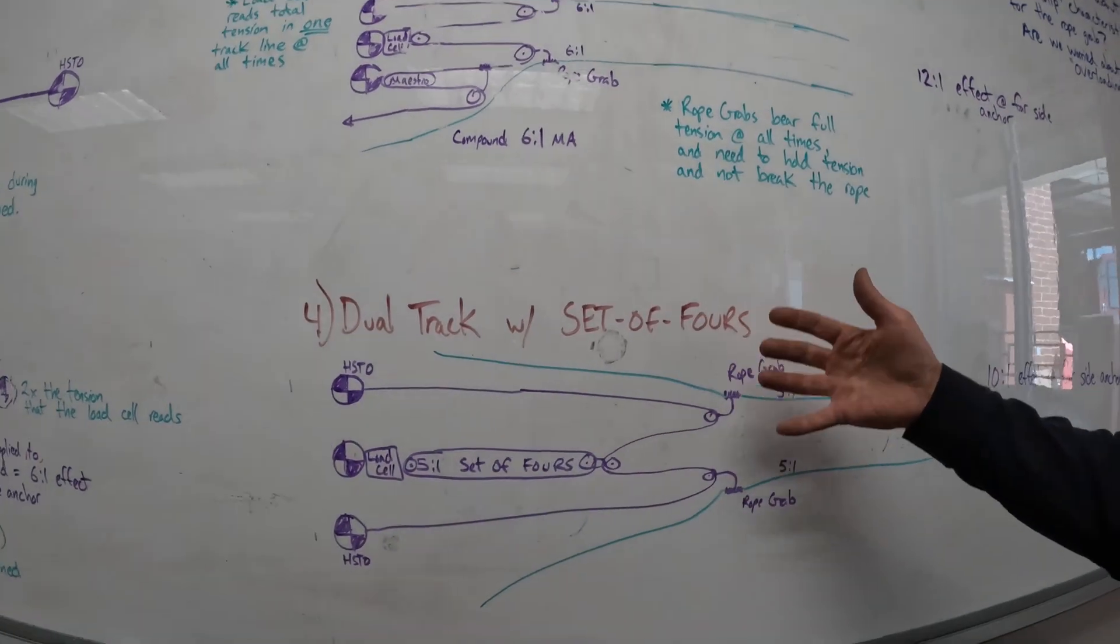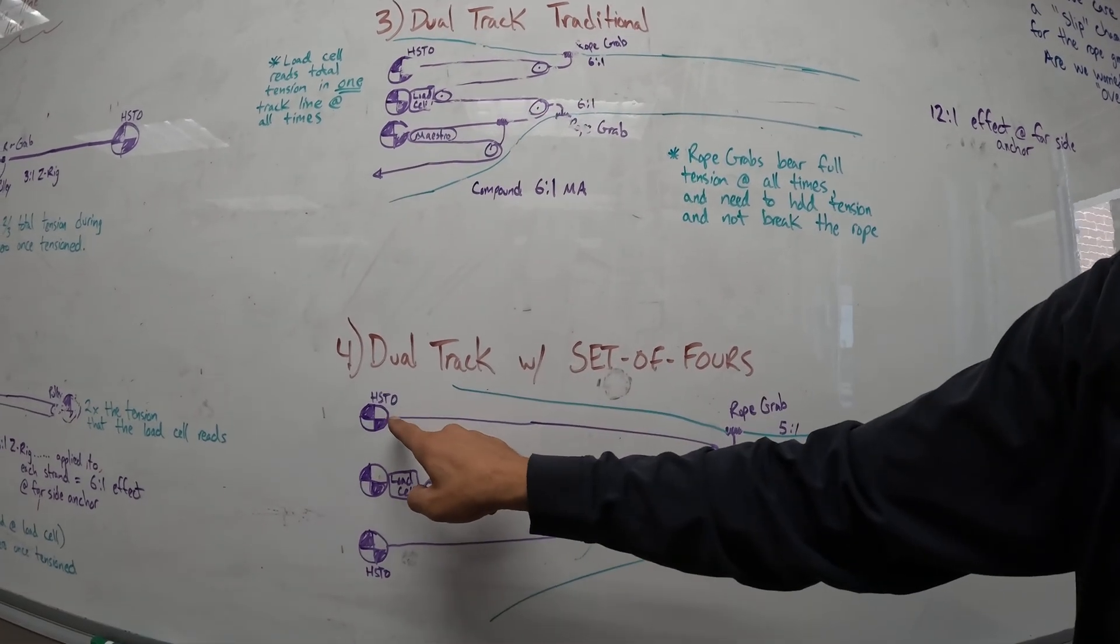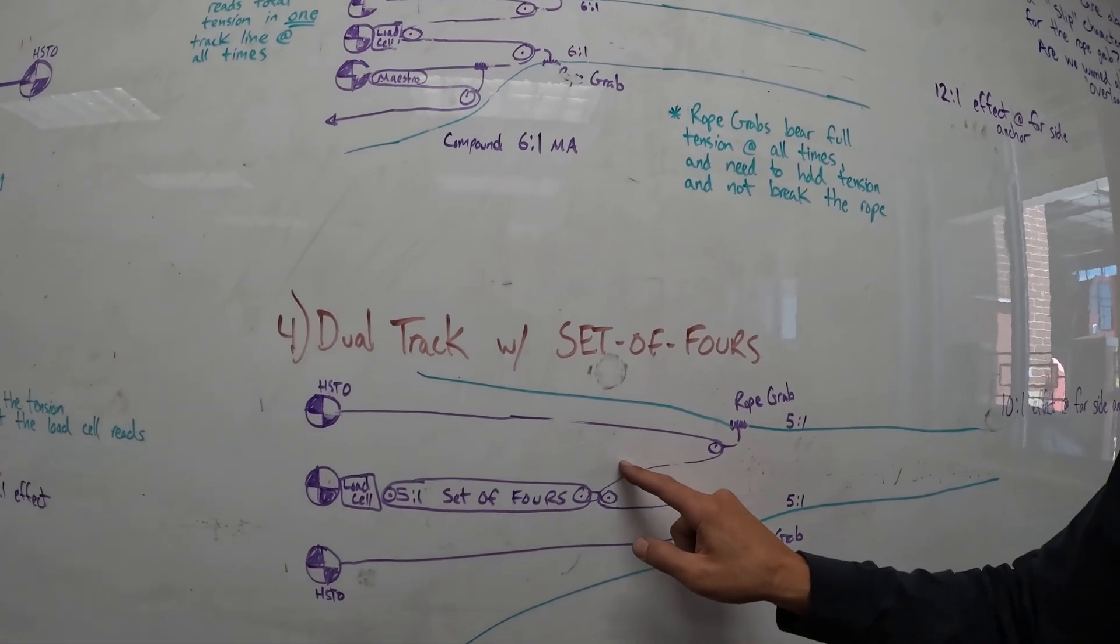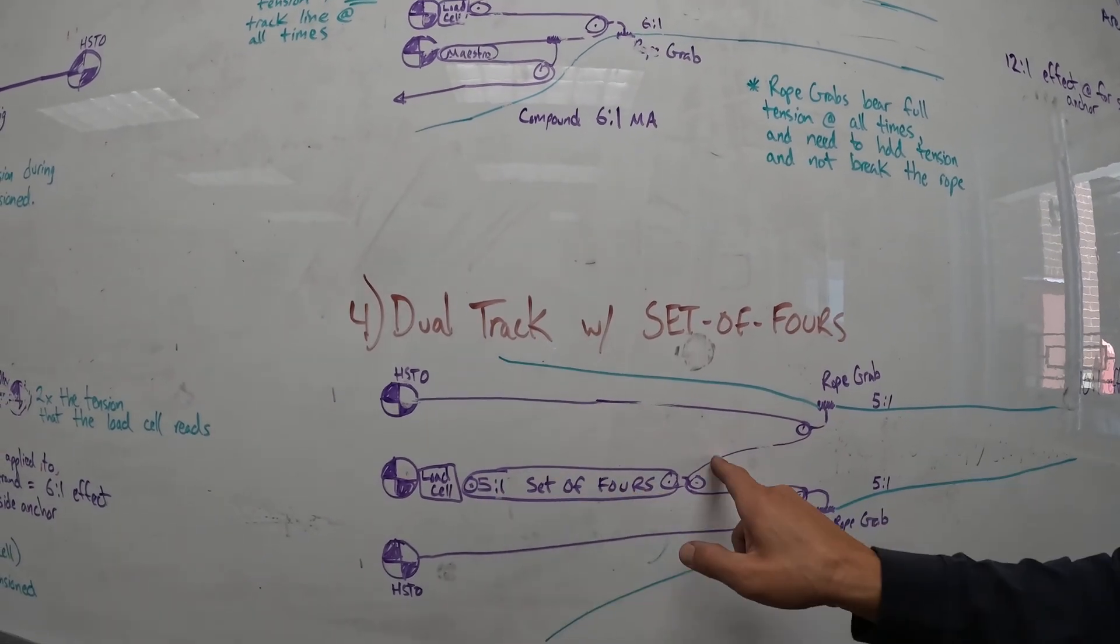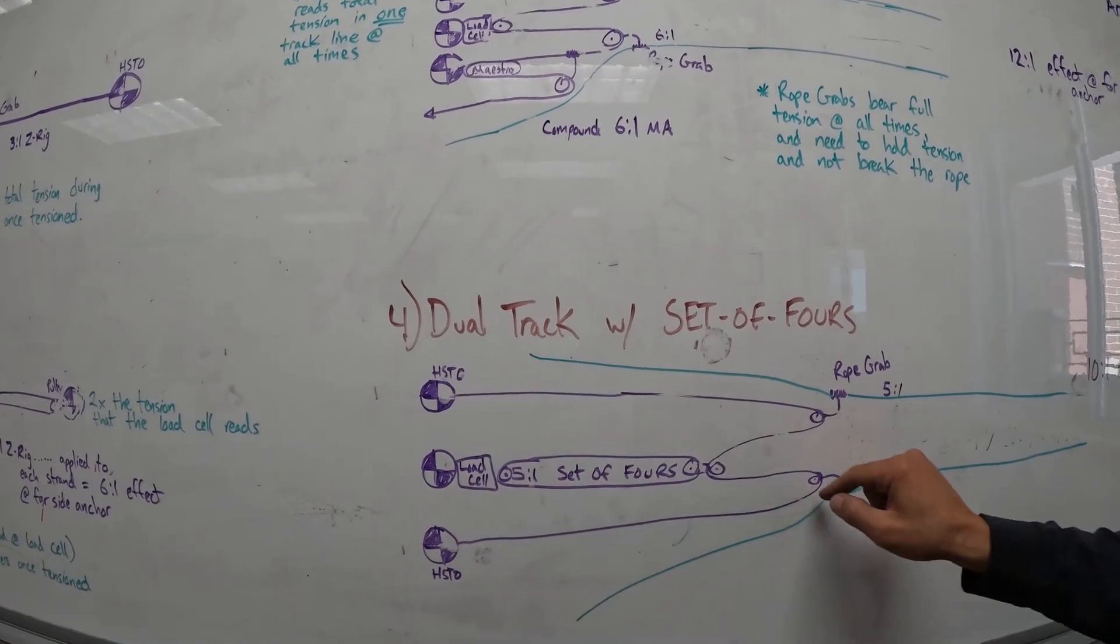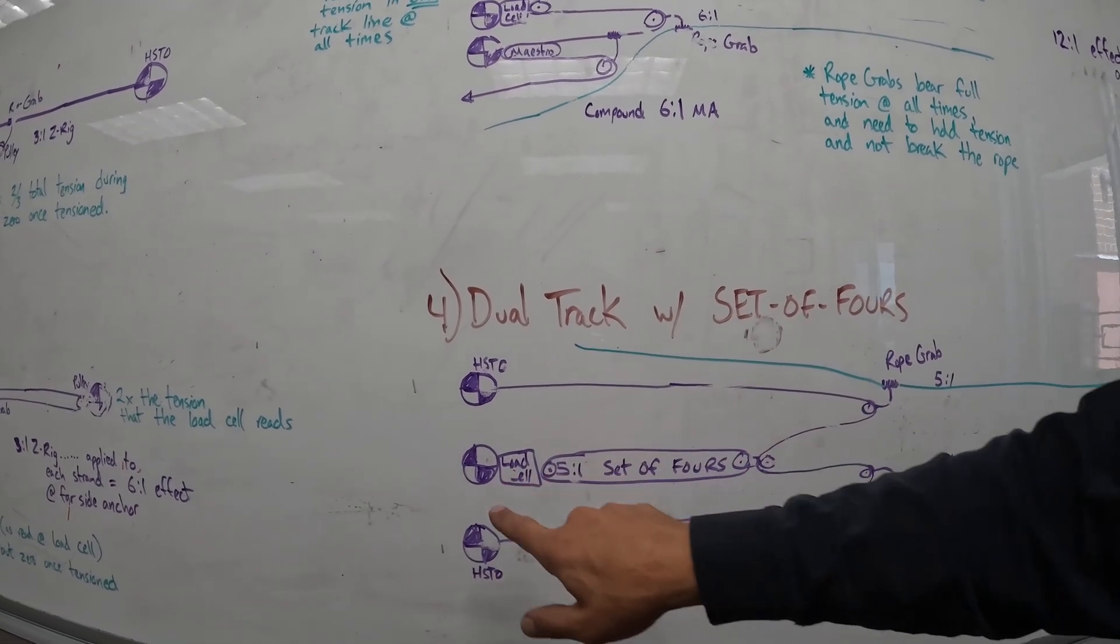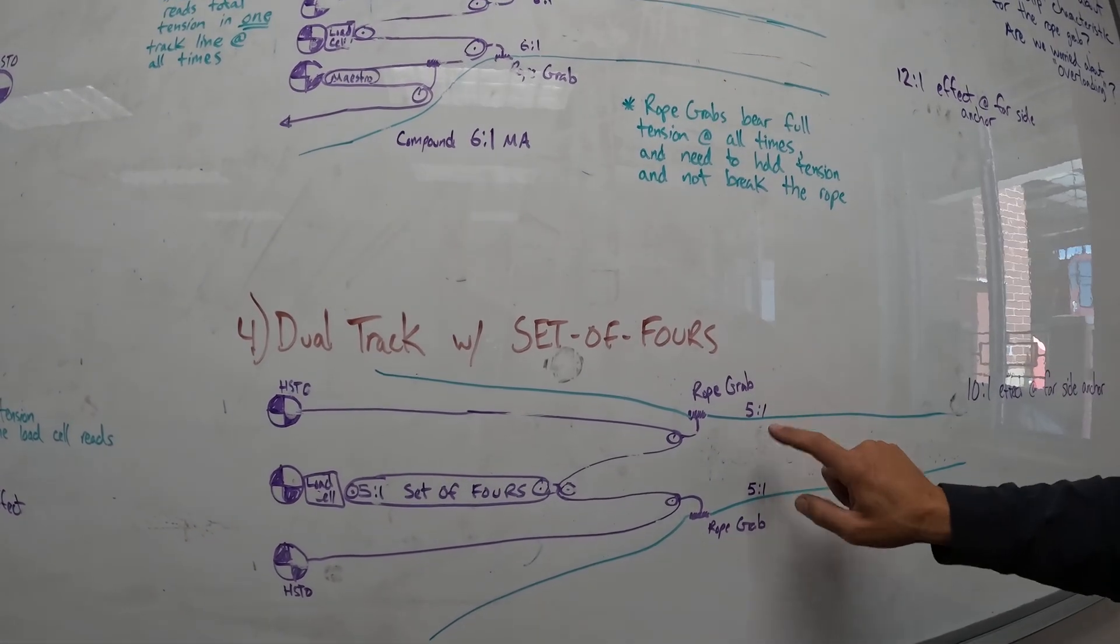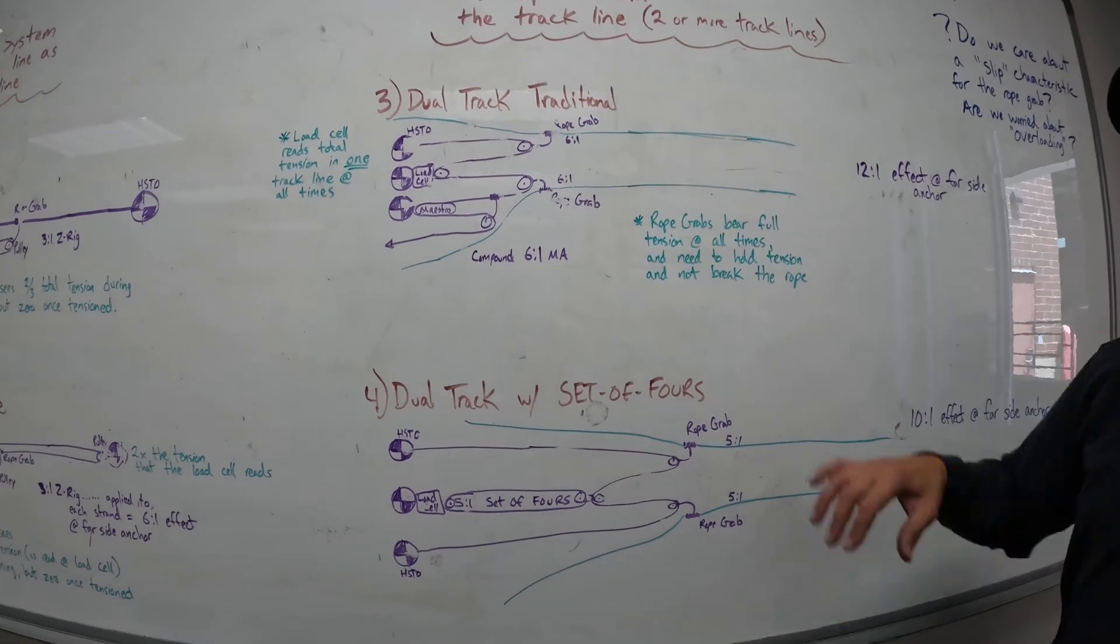This one down here is also a dual track, but instead of using one line and compounding mechanical advantage, we take the terminal end of our tensioning system, high strength tie off, comes up through a 2 to 1, rig that in there, comes down. This would be at the anchor here, we're just going to throw in a set of fours between it, and then it goes to the second 2 to 1 and then we terminate. No maestro here, it just terminates. It's a fixed line but we bring, we collapse that fixed line with our set of fours in a 5 to 1 configuration and put the load cell here. We collapse everything. Again, the same thing applies. A little bit different this time, it's not a 6 to 1 on each as it is here, it's a 5 to 1 on each track line for a net effect at the far side anchor system of 10 to 1. Just another way to do it.